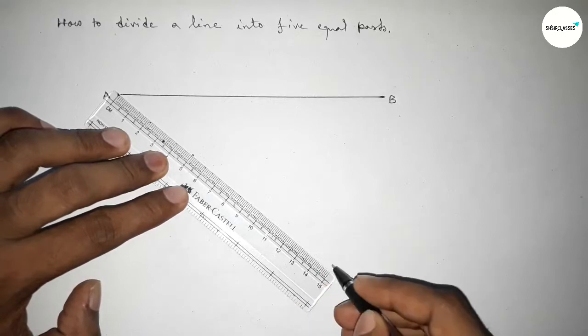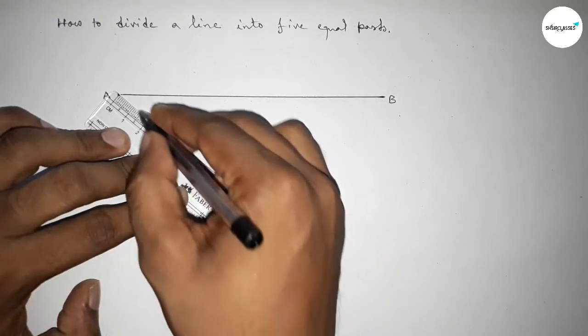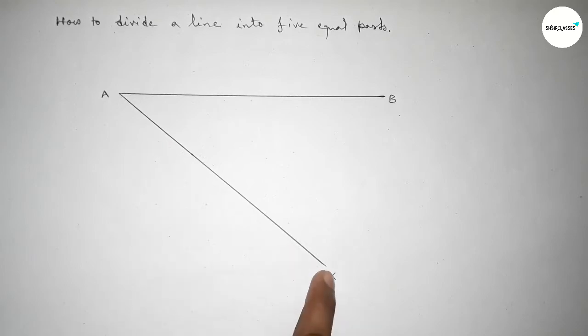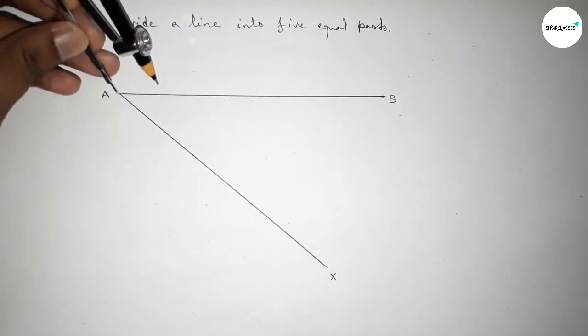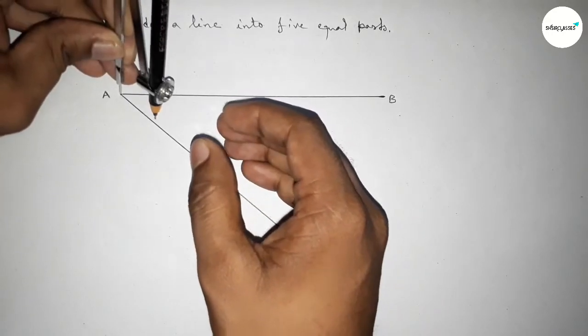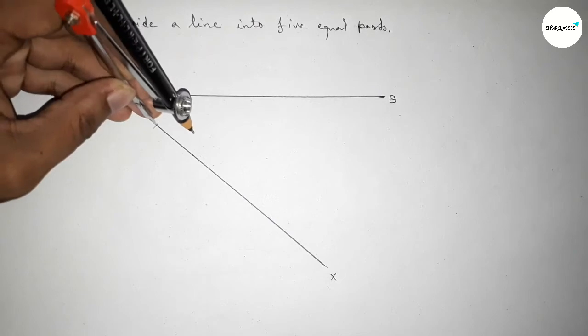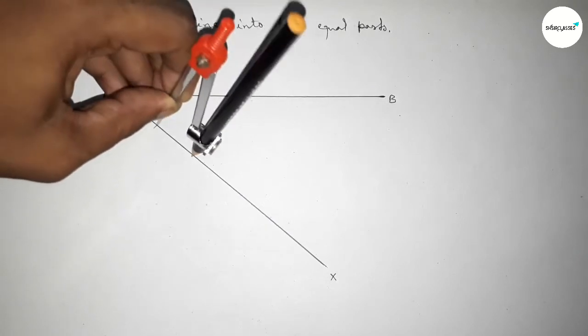So now joining this line and taking here point X. Next, we should mark five equal parts on the line AX. So putting the compass on the point A and taking any length and marking the line AX into five equal parts.